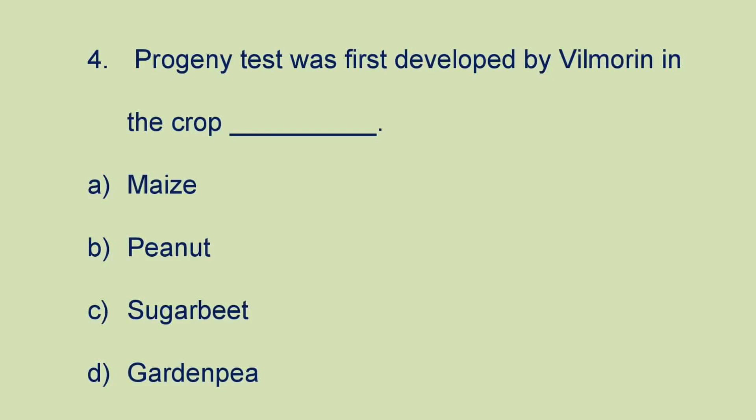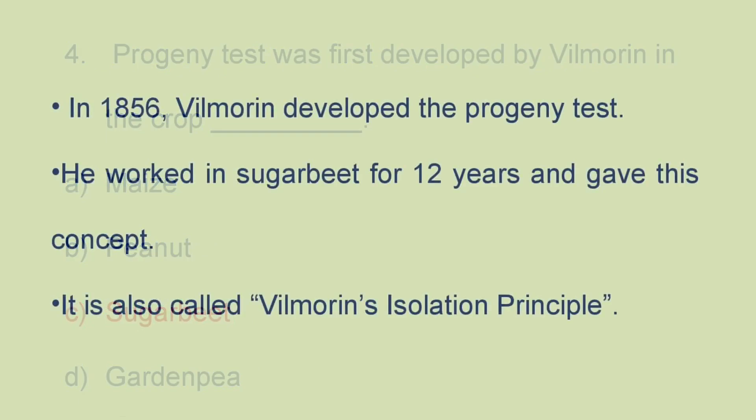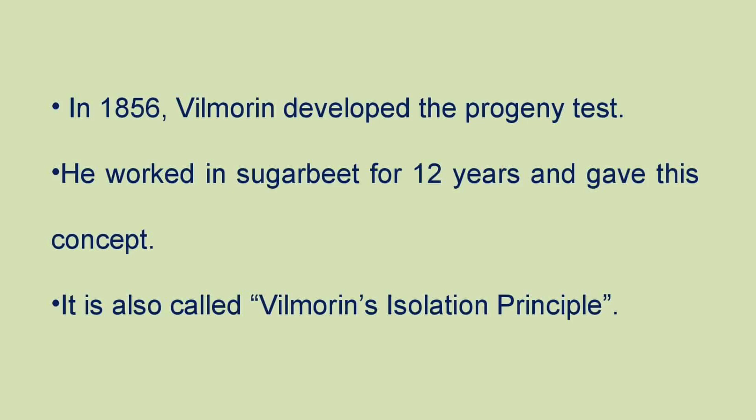Next question: progeny test was first developed by Wilmorin in the crop A) maize, B) peanut, C) sugar beet, or D) garden pea. The answer is this concept was developed in sugar beet. In 1856, Wilmorin developed the progeny test. He worked in sugar beet for 12 years and gave this concept, which is also called Wilmorin's isolation principle.